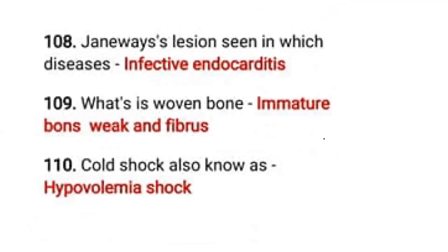Janeway lesion is seen in which disease? Infective endocarditis. What is woven bone? Immature bone — weak and fibrous. Cold shock is also known as hypovolemic shock. These are very important points.